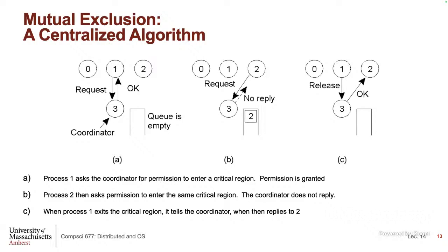That is a very simple approach, but there will be lots of problems when things crash. For example, 1 got the lock and then crashed — 2 is waiting but the lock is never going to be released because the process that holds it is gone. Or worse, the coordinator crashes — the other processes may not know what to do because they cannot make lock requests. Failures of processes cause all sorts of problems — that's why this is a complicated issue.